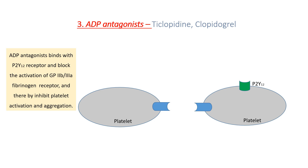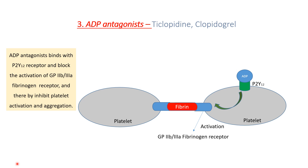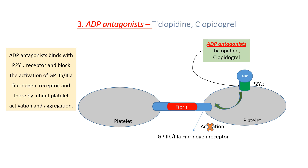The next class is ADP antagonists; examples include ticlopidine and clopidogrel. ADP binds with the P2Y12 receptor, resulting in a cascade of reactions that leads to the activation of the GP2B3A fibrinogen receptor. After activation of this fibrinogen receptor, fibrin binds with it and leads to platelet aggregation. Our drug, the ADP antagonist, binds with the P2Y12 receptor and inhibits the activation of the GP2B3A fibrinogen receptor, thereby inhibiting platelet activation and aggregation.